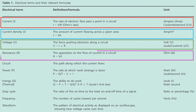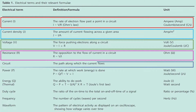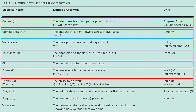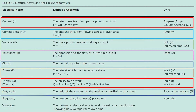Resistance is the opposition to the flow of current in a circuit; formula: R = V/I; unit: ohm. Circuit is the path along which the current flows. Power is the rate at which work or energy is done; formula: P = Q/T = V × I; unit: watts (joules per second). Energy is the ability to do work; formula: Q = P × T; unit: joules. Duty cycle is the ratio of the on-time to the total on and off time of a signal; unit: ratio or percentage.